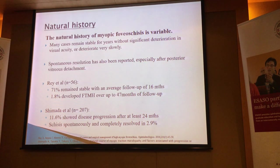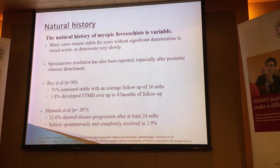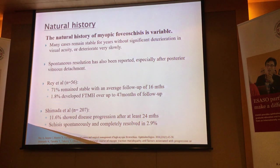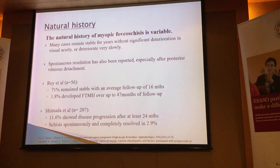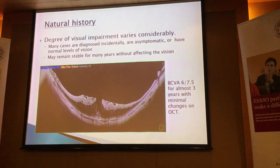In general, about 70% to 80% can sometimes remain very stable, and it can remain stable for years — one year, 16 months, two years, sometimes even up to four to five years. In a small percentage — 2% to 3% — they will actually go on to develop a full-thickness macular hole. Spontaneous resolution of schisis happens in about 2% to 3% as well, so not many at all. The degree of visual impairment is also very variable.